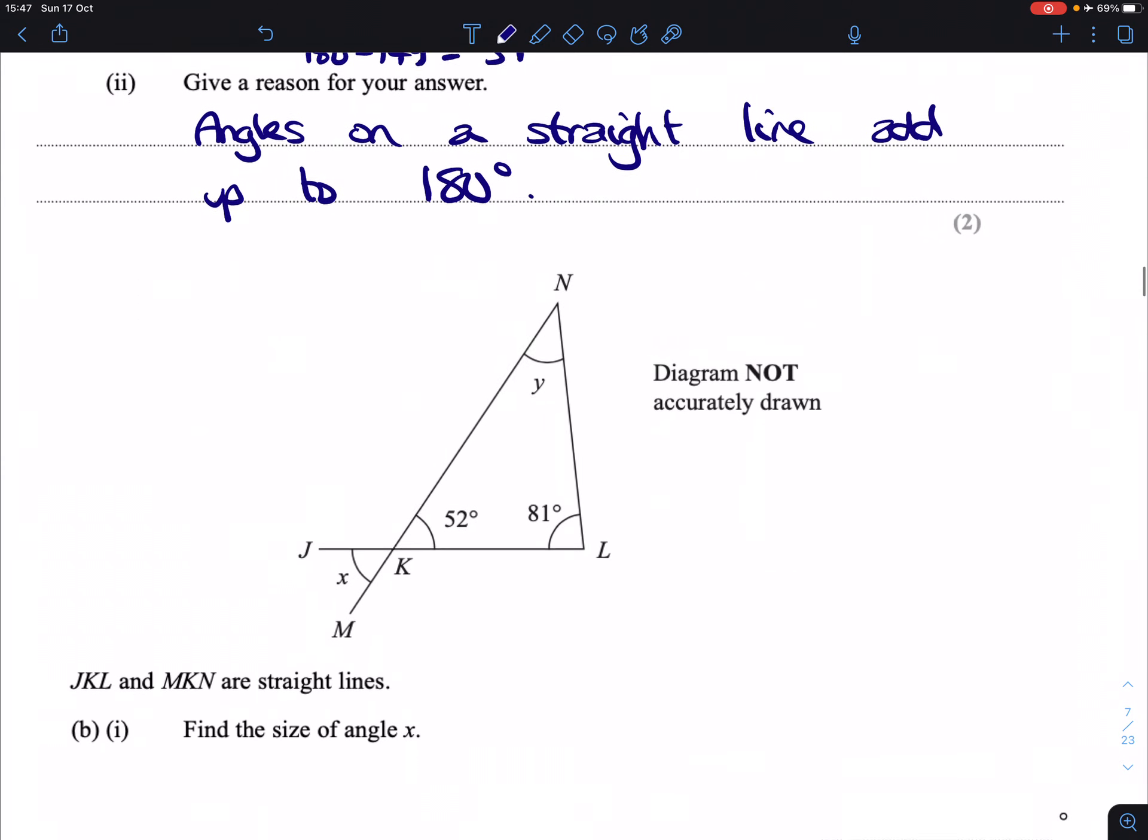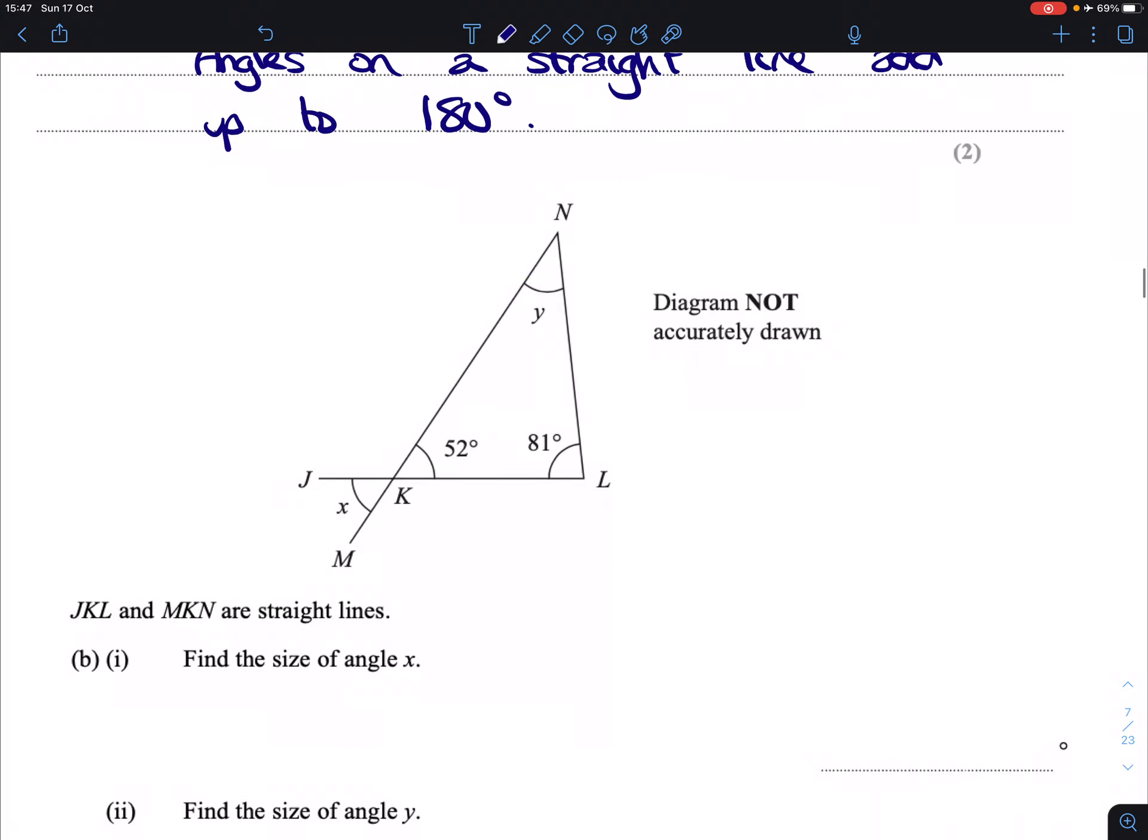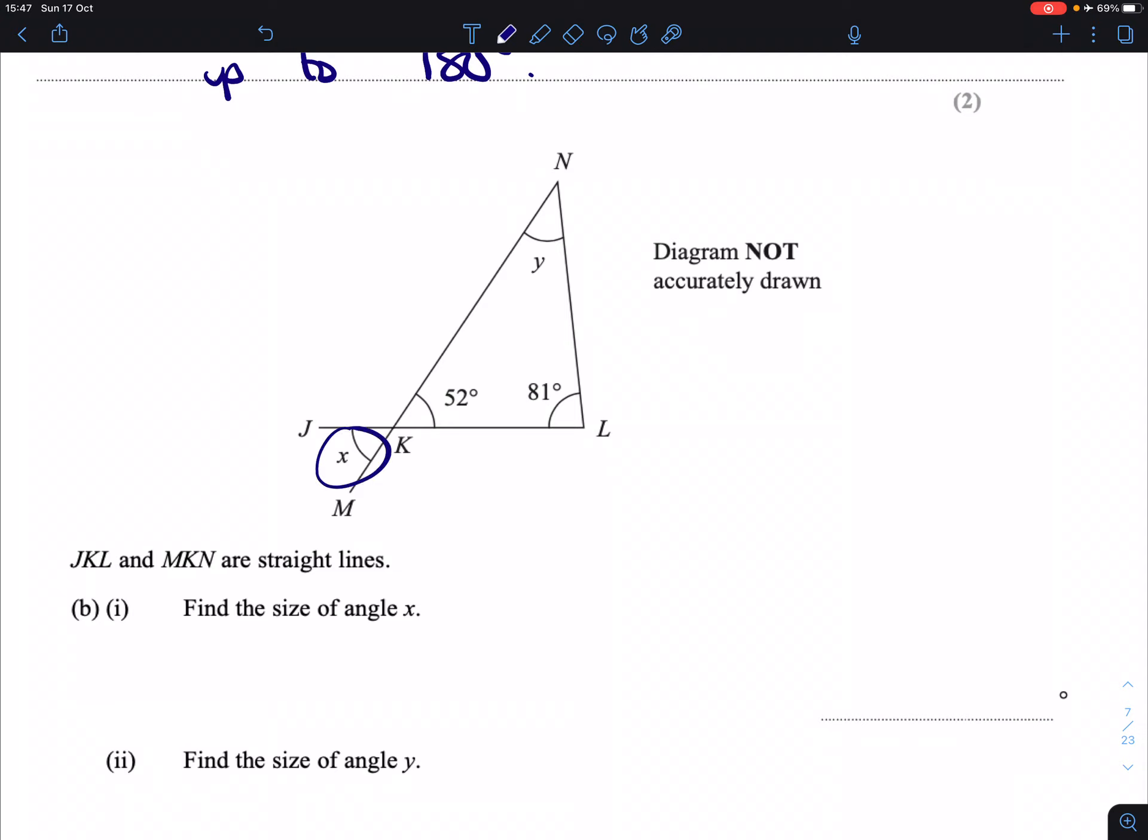Okay, next part. We've been told that JKL and MKN are straight lines. We've been given a couple of angles, and we have X and Y labeled. Part B1: Find the size of angle X.